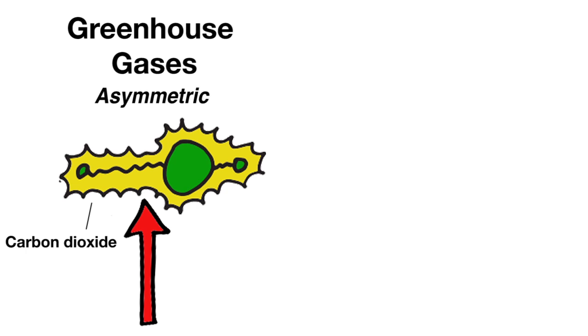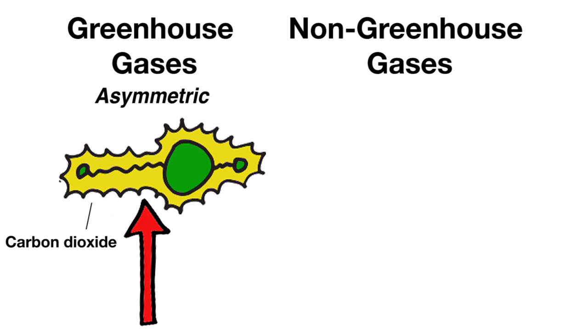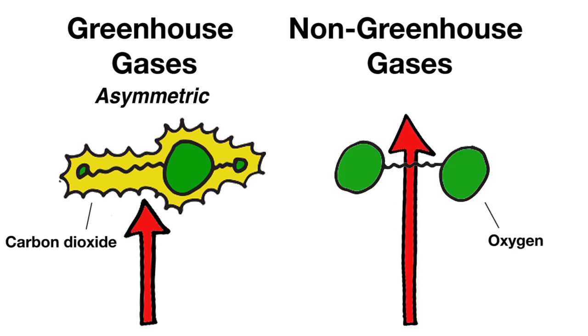In contrast, non-greenhouse gases, such as oxygen, that is, O2, don't absorb infrared light because they have symmetric charge distributions even while vibrating.